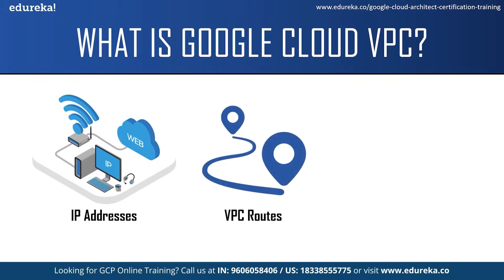Talking about VPC routes — routes tell virtual machine instances and the VPC network how to send traffic from an instance to the destination, either inside the network or outside Google Cloud (the internet). You can also create custom static routes to direct packets to specific destinations. Each VPC network comes with system-generated routes. There are two types: the default route, which defines a path for traffic to leave the VPC network and provides general internet access; and subnet routes, which define the path for sending traffic among instances within the network using internal IP addresses. For one instance to communicate with another, you must configure appropriate firewall rules because every network has an implied deny firewall rule for ingress traffic.